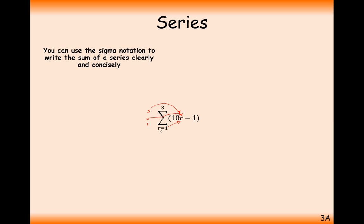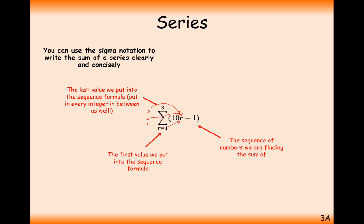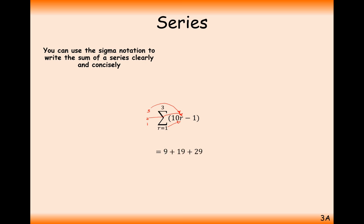The bottom number on your sigma is your starting point of summating, and the top number is the last number that you substitute in to the r value. You work through all of the numbers between 1 and 3, continually summating what you get once you've substituted in to 10r minus 1. So in this case, substituting in 1 gives 9; substituting in 2 gives 10 times 2 is 20, take away 1, you get 19; substituting in 3 gives 30 minus 1 is 29. Then you add them up and you get 57.